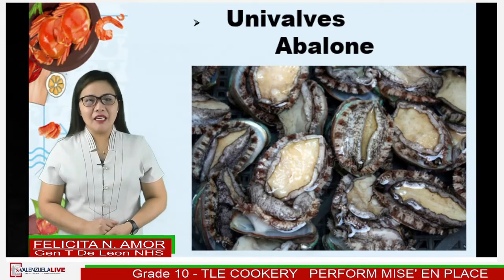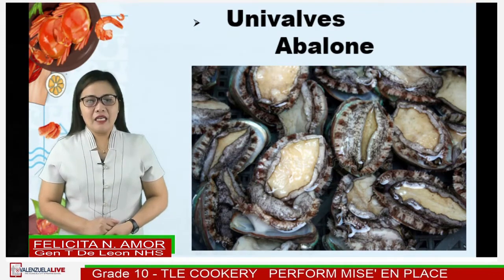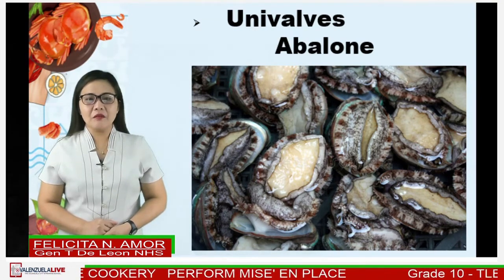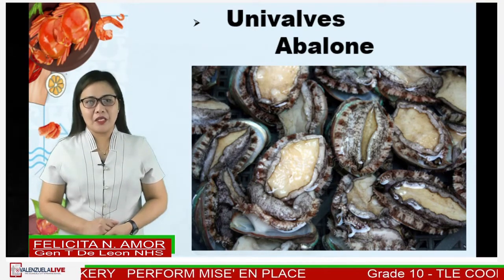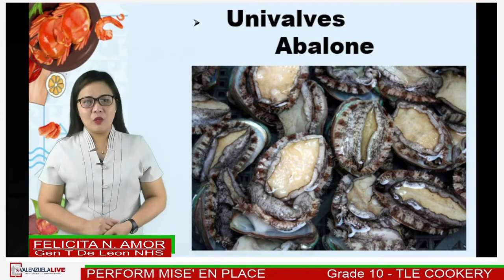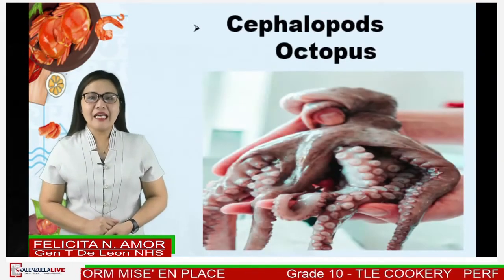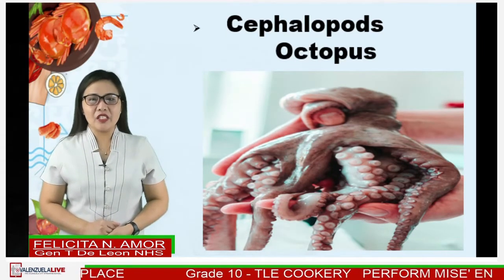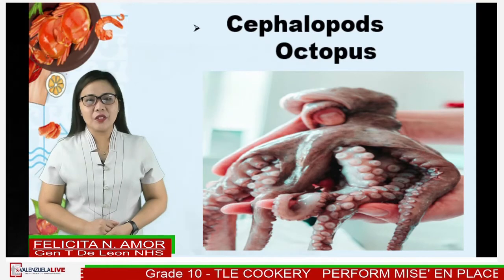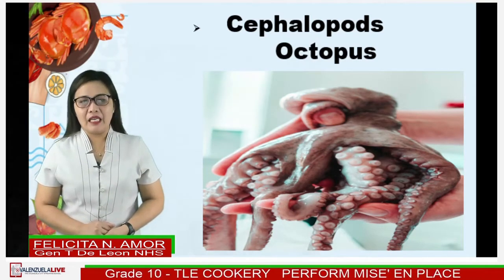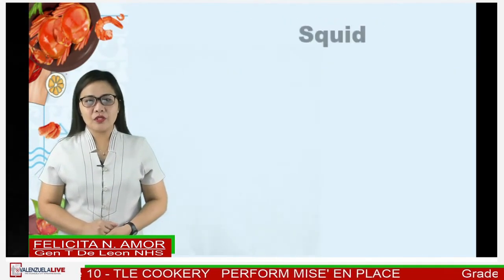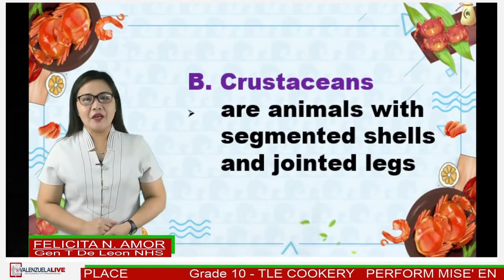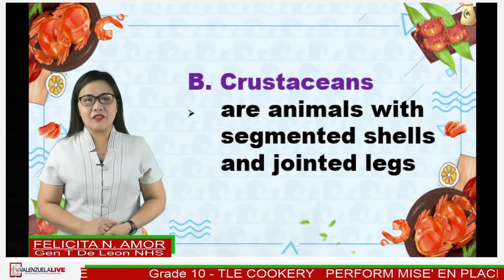Another kind of mollusk is gastropods. They have a single shell, comprising snails or slugs from saltwater or fresh water. An example is abalone. The last kind of mollusk is cephalopods. They have no outer shells, but just a single internal shell called a pen. Examples are octopus and squid.